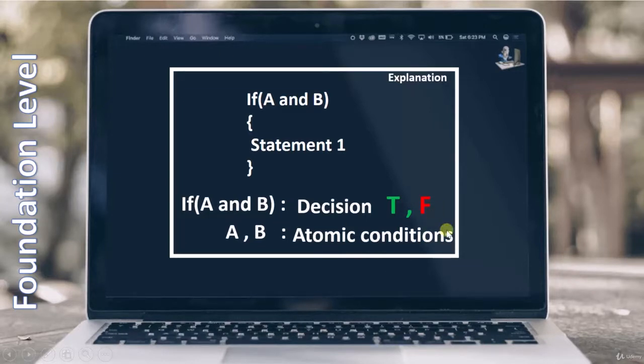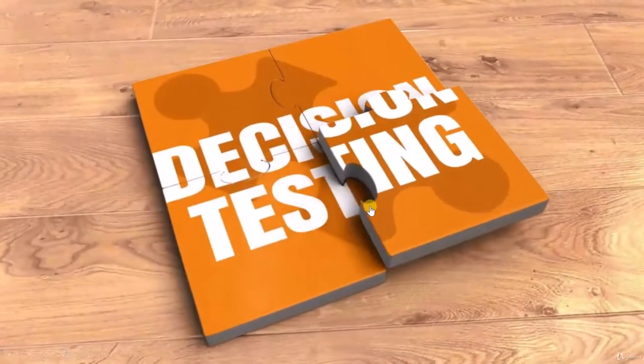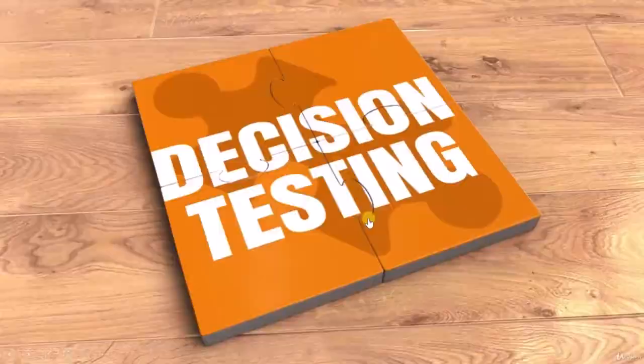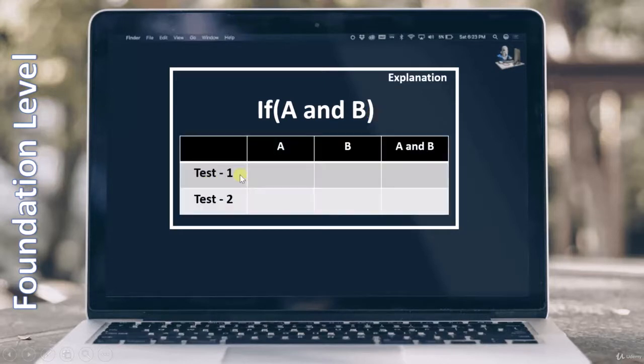In order to understand it better, let's see what is the meaning of decision testing. Going with the same example, if A and B, we will have the same table here where A and B are the conditions and if A and B is a decision. As I told you, now our focus is on the decision. We don't care what combination we will get here. What we are caring about is we should get false once for the complete decision, and next time we should get true. This is what we want to achieve.